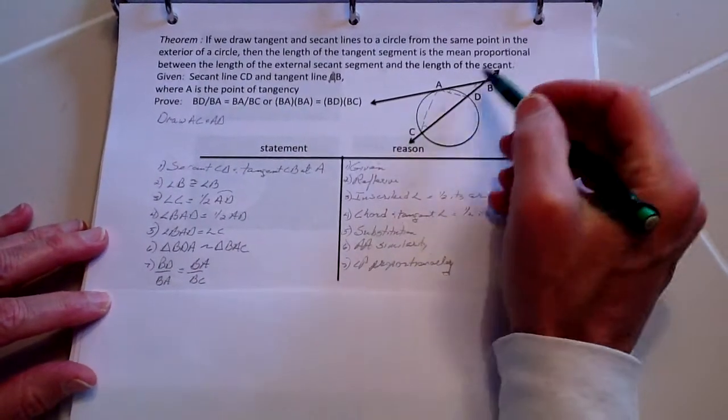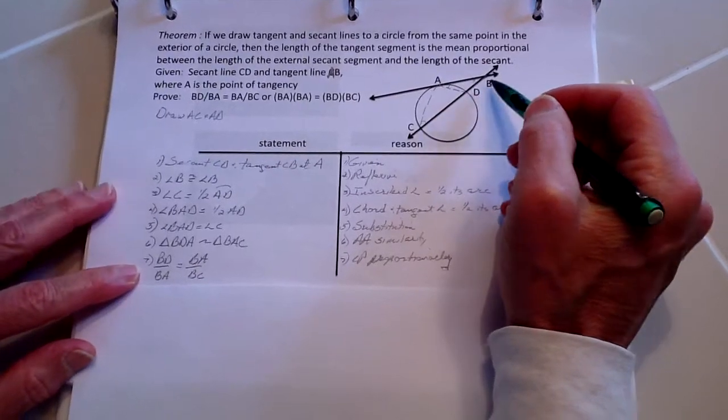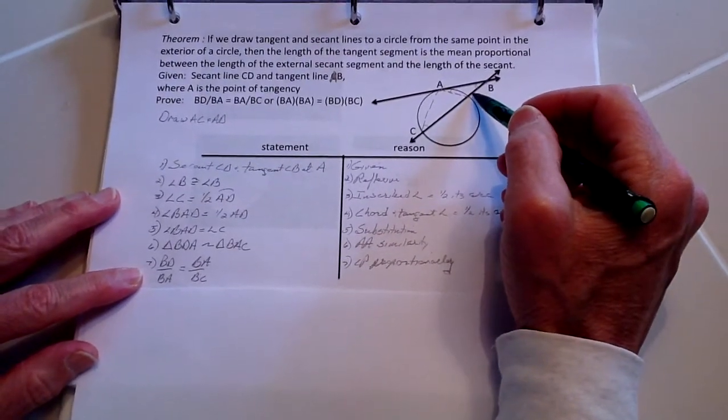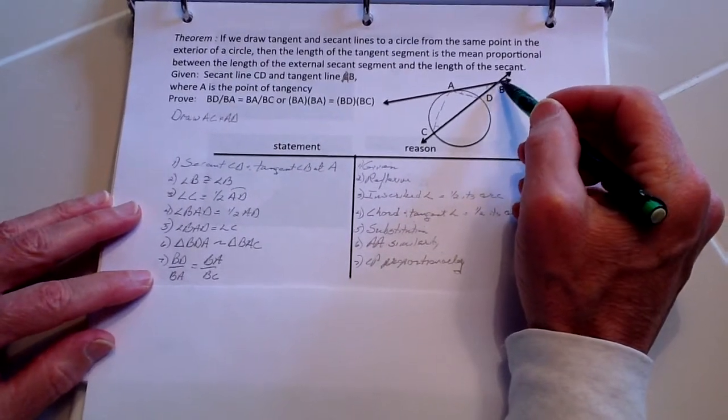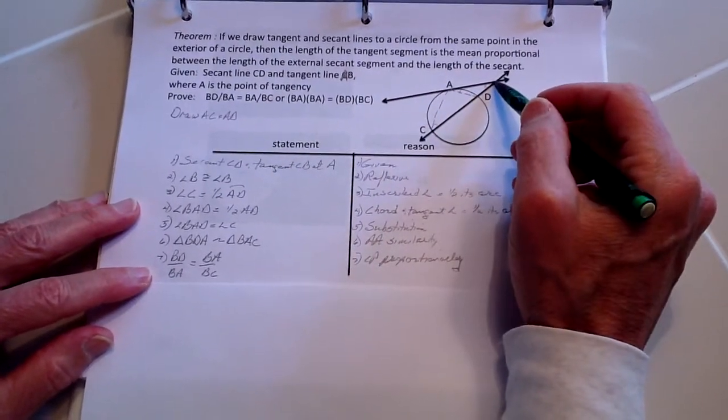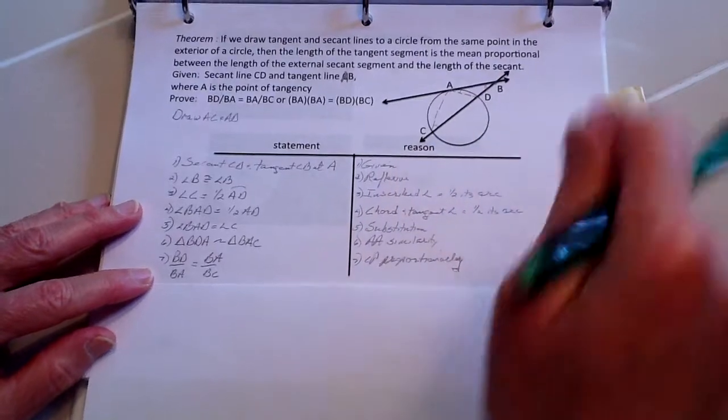From that we know the proportions of these triangles then. Therefore, BD over BA is going to be the same proportion as BA over BC.